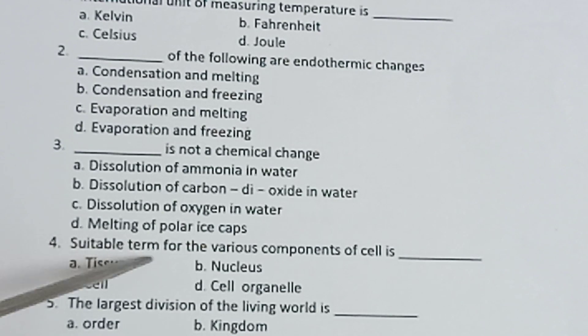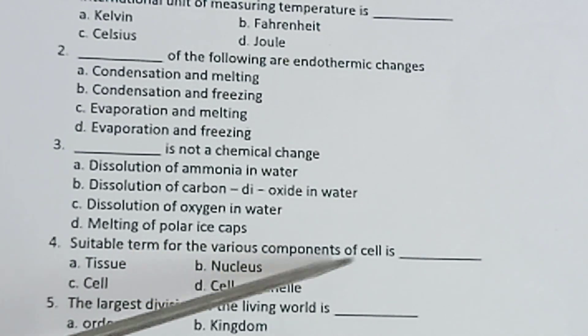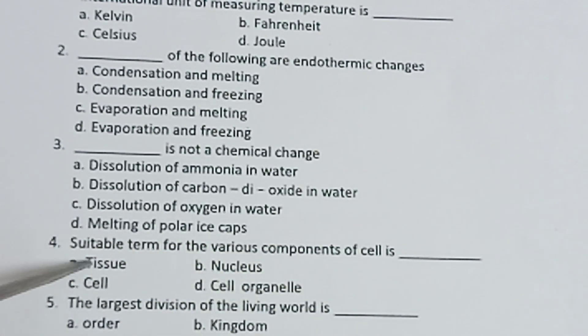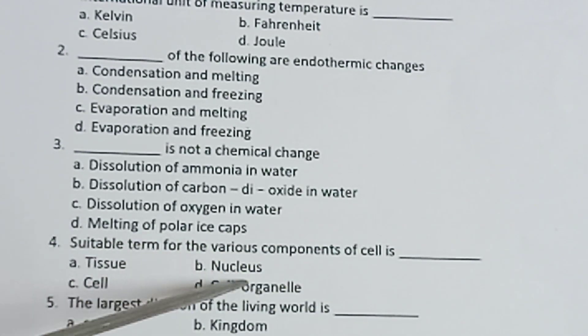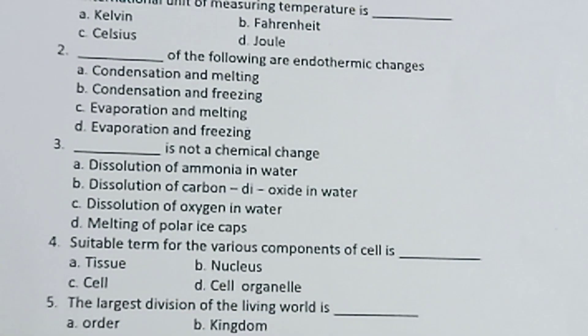Fourth one: The suitable term for the various components of a cell is dash. Options: tissue, nucleus, cell, cell organelle.